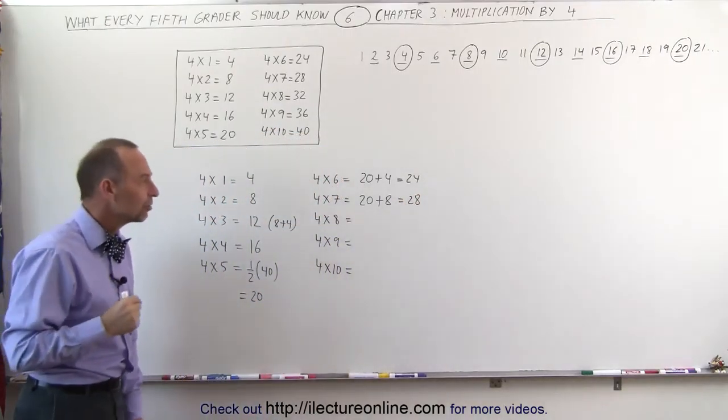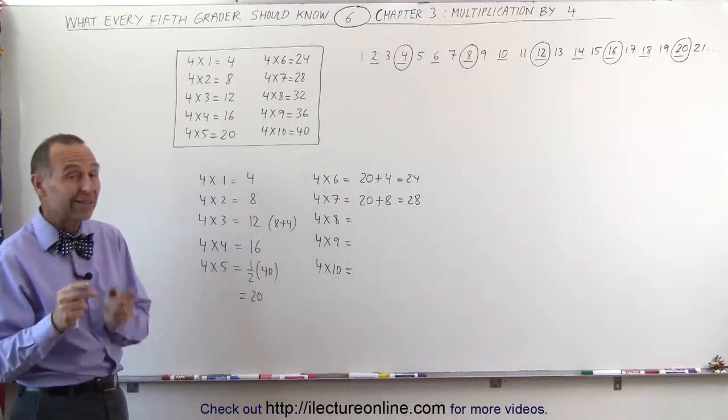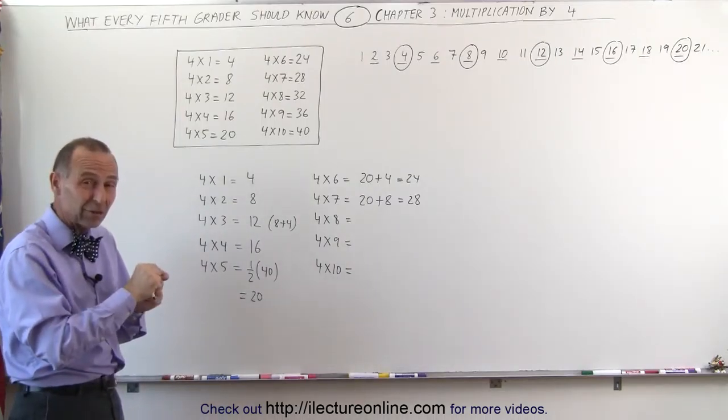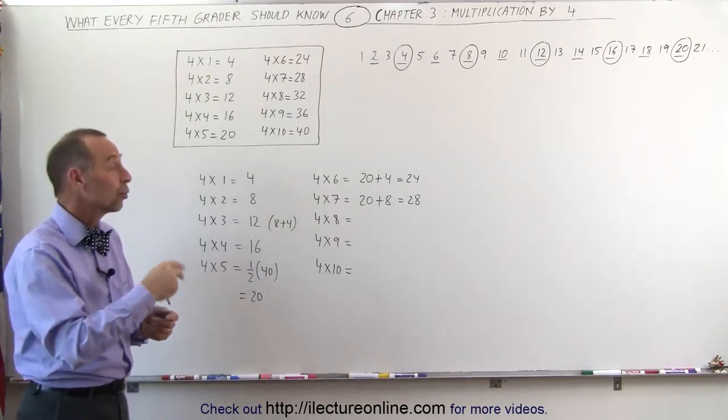Sometimes you need to play those little tricks in your head when you're multiplying. You go, okay, 4 times 5, I know what that is, that's 20. Therefore, 4 times 6 is just 4 more, that's 24. Or 4 times 7, that's 8 more, that's 28.